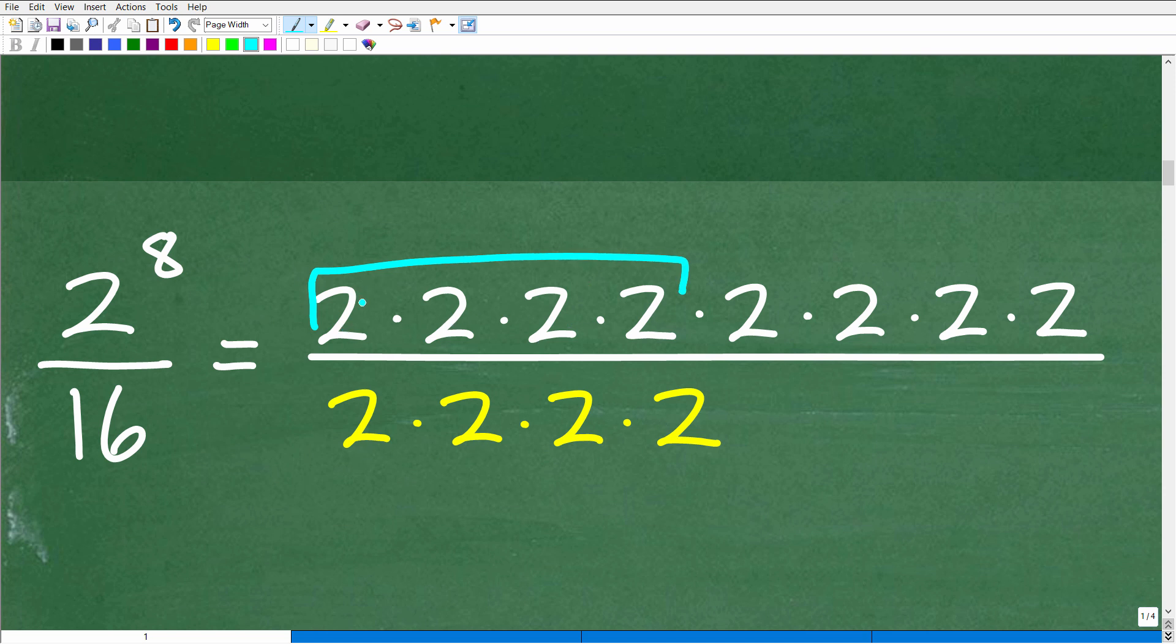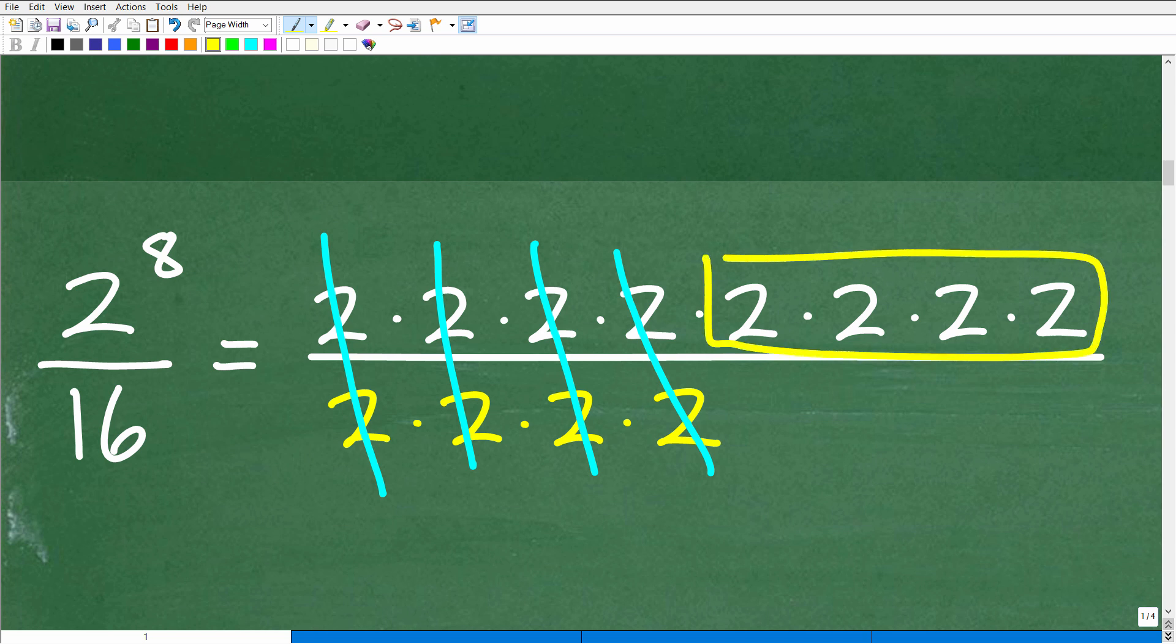Remember, when you're dealing with cross-canceling like factors, it's 1 for 1. This 2 could cross-cancel that 2. This 1 could cross-cancel this 1, and so forth. So what are we left over with? We're left over with these 4 2s, right? 2 times 2 times 2 times 2. Well, we already know what that is because 2 times 2 times 2 times 2 is 16. So our final answer is 16.